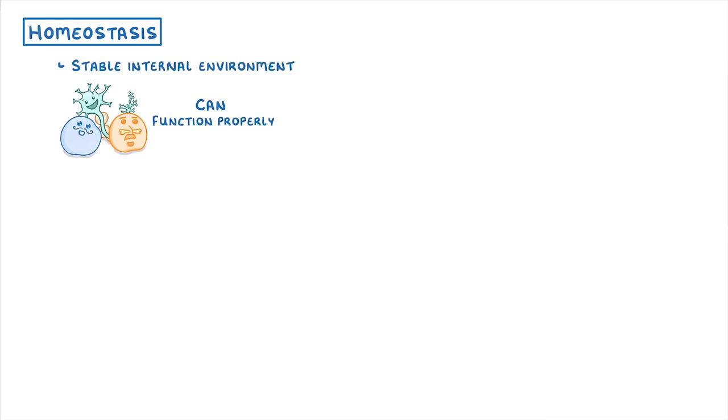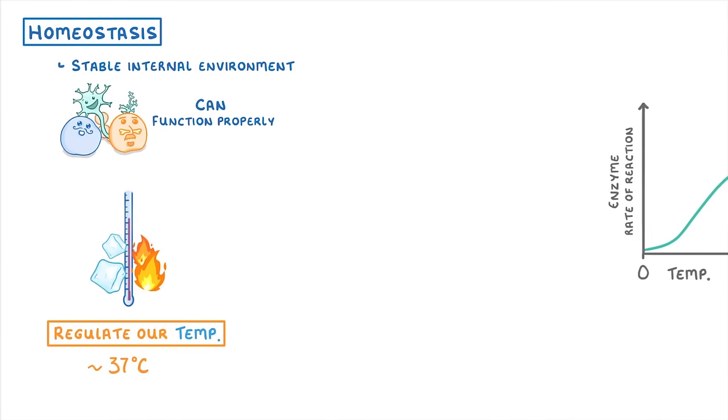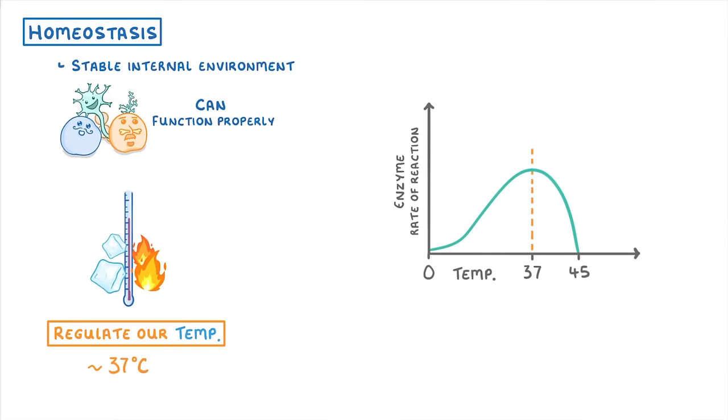One of the most important things our body has to regulate is our temperature, which has to be kept around 37 degrees Celsius all the time. The main reason for this is that 37 degrees is the perfect temperature for our enzymes to function. If we fall below this temperature, their activity slows down, and above this temperature they start to denature and can't work at all.